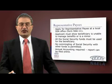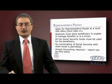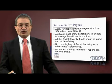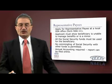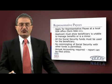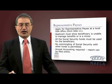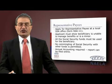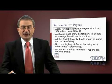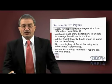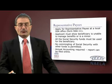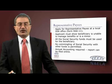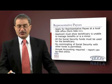To become a representative payee, one must apply at a local Social Security office and fill in the appropriate form. The applicant must show the beneficiary is unable to manage benefits or is a minor. All Social Security funds must be used for the beneficiary by the representative payee. The representative payee cannot commingle Social Security money with any other funds, and must also file an annual accounting, which can be done online.